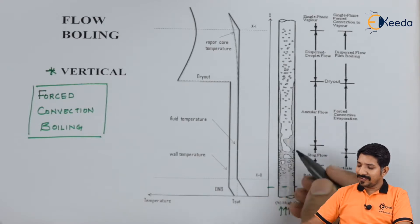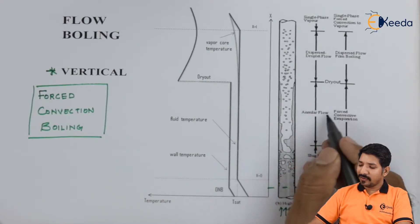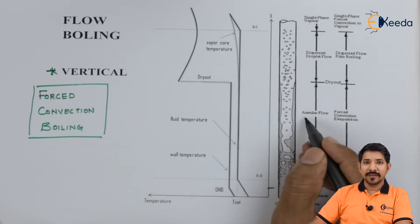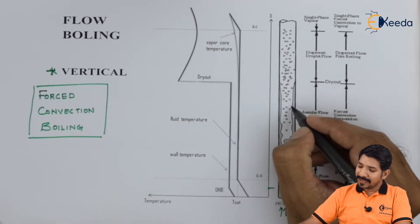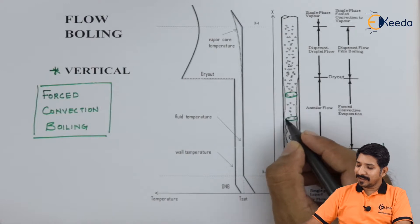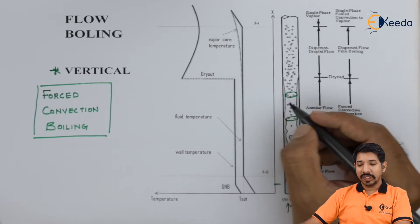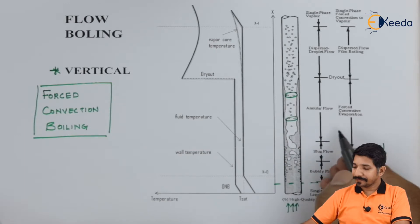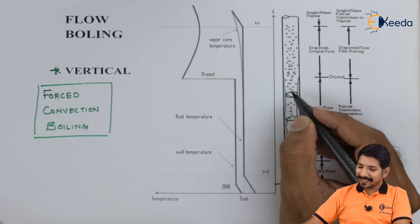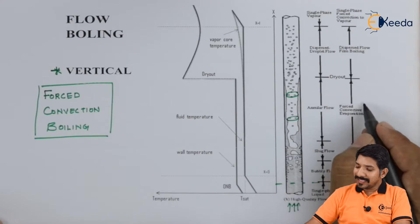After the slug flow, the slugs start collecting and form an annular flow. The annular flow gets its name because it looks like an annular ring. The annular ring diameter keeps increasing as we move upward. In this annular region, small droplets are present in between, and only a thin layer of fluid covers the wall of the tube. Heat transfer is predominantly by forced convection evaporation in this region.